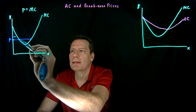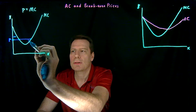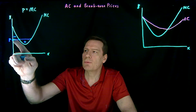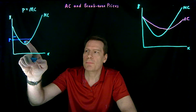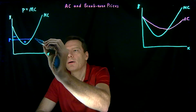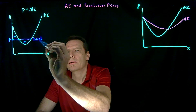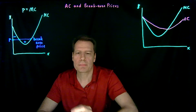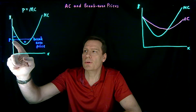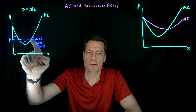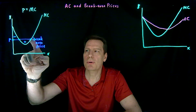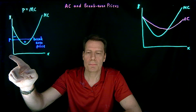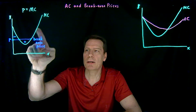Once price is above marginal cost, we start making money on each additional unit, creating a positive profit area. When we reach a price where the negative area is the same size as the positive area, we've found our break-even price. The firm will produce where price equals marginal cost if the price is at or above the break-even price, but if price falls below that, the firm produces nothing. This gives us the supply curve for the firm.